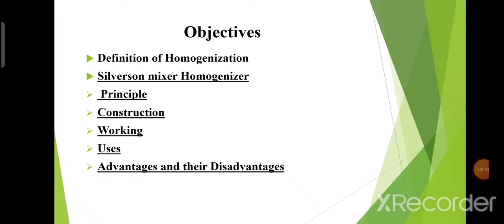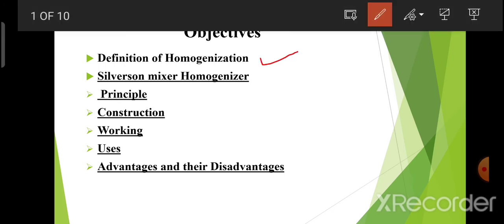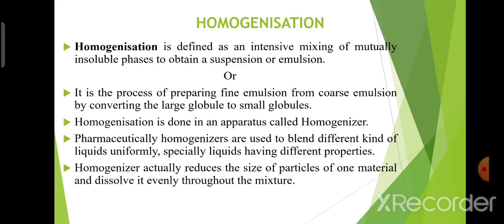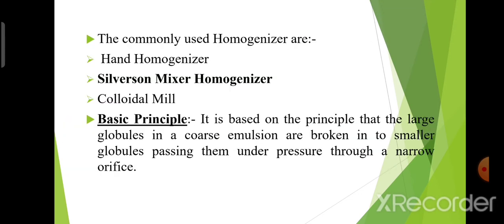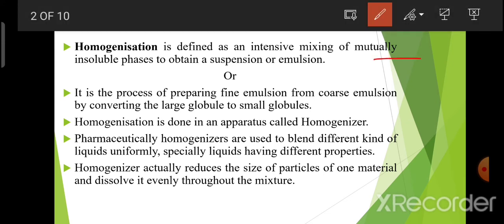Good morning students. Today in this lecture I will be covering these topics: definition of homogenization, Silverson mixer homogenizer principle, construction, working, uses, and their advantages and disadvantages. Homogenization is defined as an intensive mixing of mutually insoluble phases to obtain a suspension or emulsion. Homogenization is the process of making things uniform or similar.